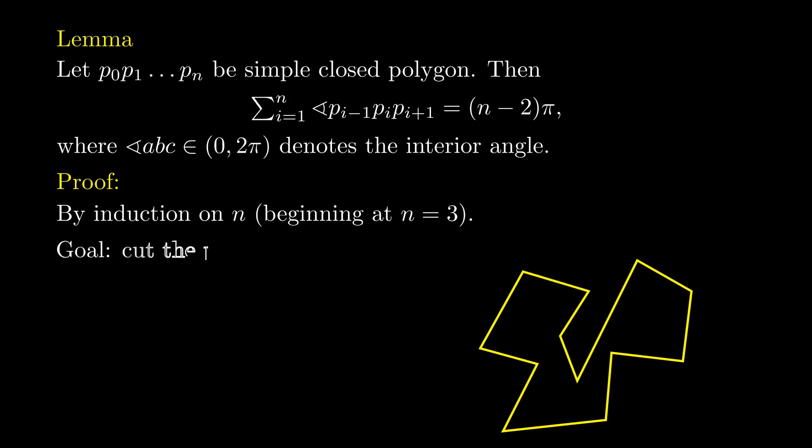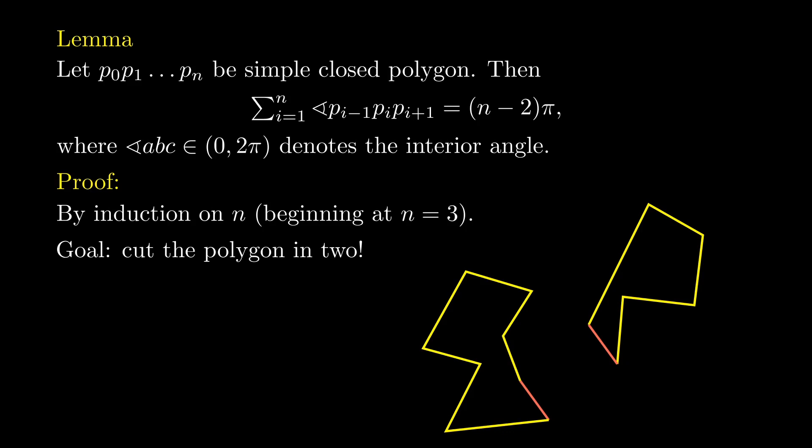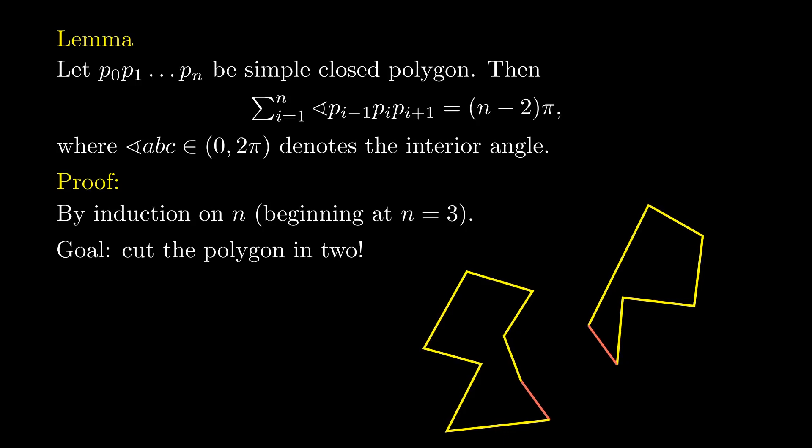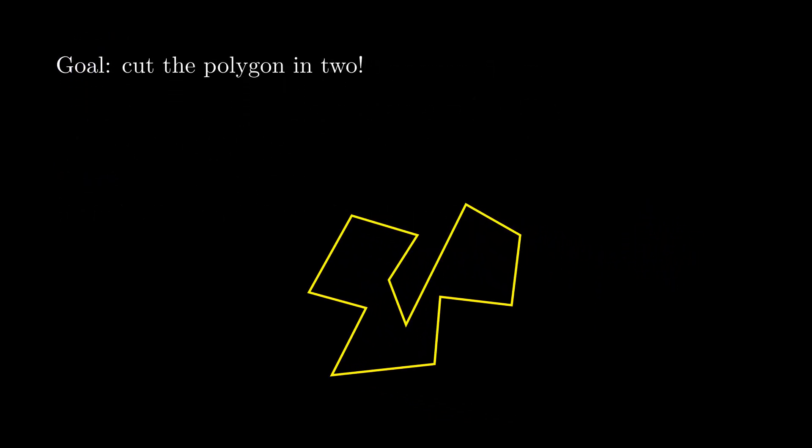Then we take a polygon with n sides and assume the lemma holds true for polygons with strictly fewer sides. Our goal now is to cut the polygon along a segment between two of its vertices in order to obtain two smaller polygons to which we can apply the induction hypothesis.